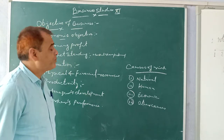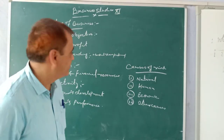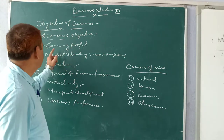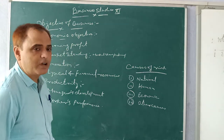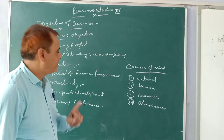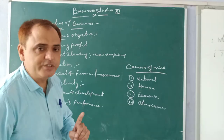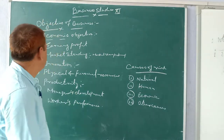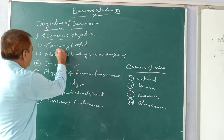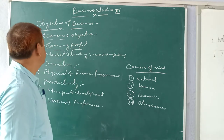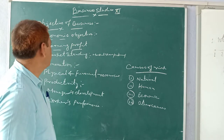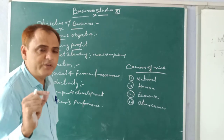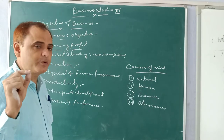So today we will learn the objective of the business. What is the objective of business? The first objective is the economic objective — earning profit. The first objective of the business is to make profit. All businesses want to do profit maximization. This is the first objective.